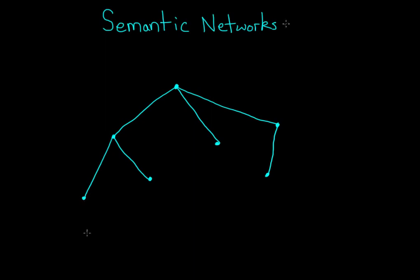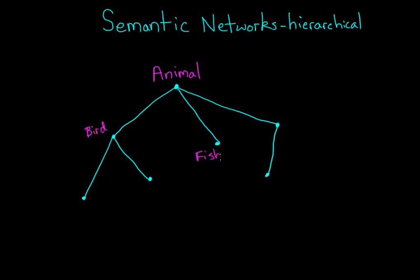The first semantic network model was hierarchical, meaning that concepts were organized from higher order categories down to lower order categories and their exemplars. So let's start with a general category: animal. Animal might be linked to other nodes such as bird or fish. And bird might be further linked to canary, bluebird, or more distantly, ostrich. Ostrich is probably not the first thing you think of when you think of a bird, so that's why its link is longer.